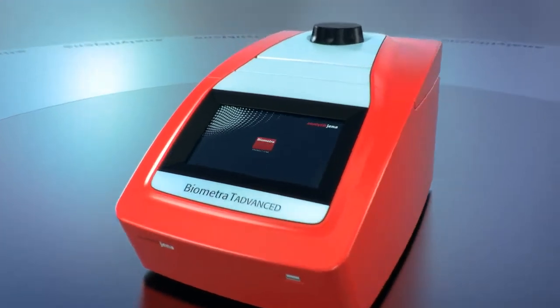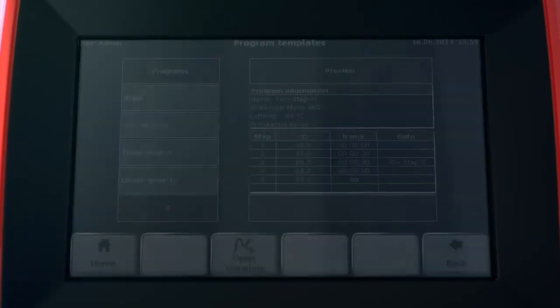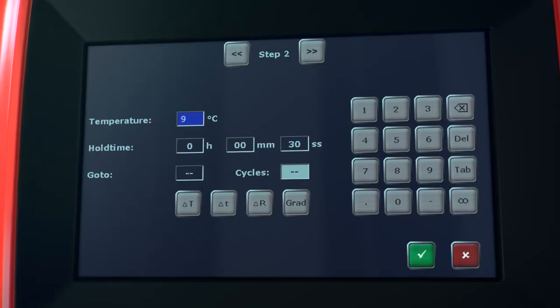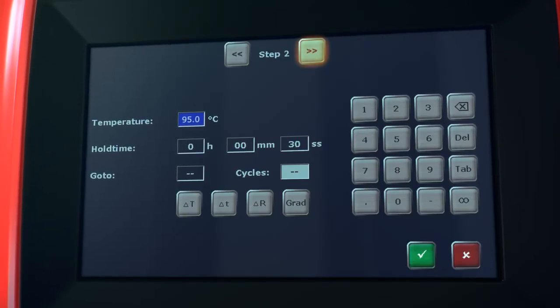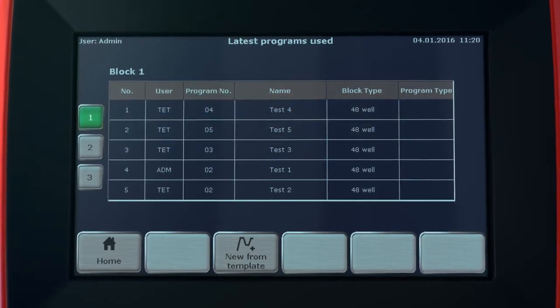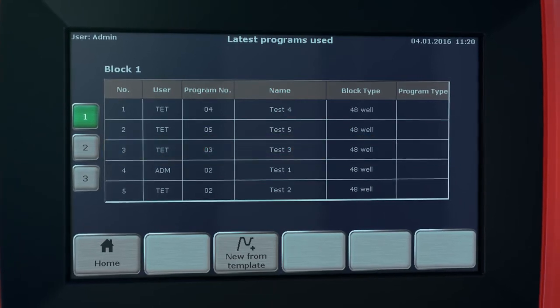Program templates can be used to create specific PCR programs. By integrated multi-step programming and linear gradient programming, the editing of program templates is very easy. For maximum ease of use, the Biometra T-Advanced Thermal Cycler offers a user-specific quick start.